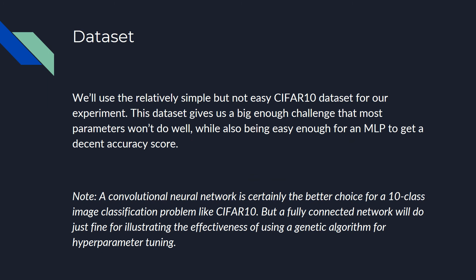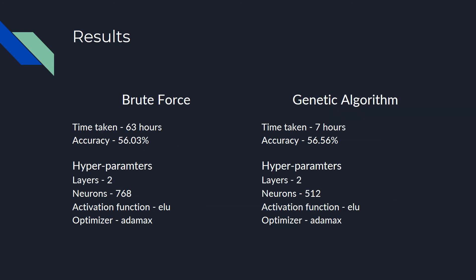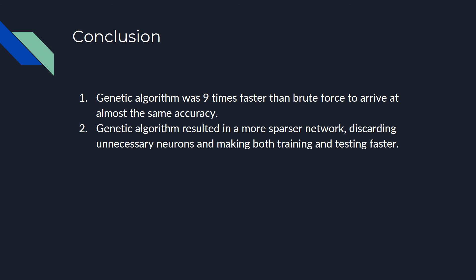The dataset used here is the CIFAR-10 dataset, and the network is an MLP — it won't give very good accuracy but it's sufficient for the scope of this example; a CNN would be a far better choice. For brute force, the time taken to find the optimal network was 63 hours with an accuracy of 56.03%. For the genetic algorithm, the time taken was 7 hours with an accuracy of 56.56%. The hyperparameters are more or less the same, but notably the neurons in the genetic algorithm result are 512, whereas for brute force they are 768. Genetic algorithm was 9 times faster than brute force to arrive at almost the same accuracy. Also, the genetic algorithm resulted in a sparser network — it discarded unnecessary neurons, which makes both training and testing faster.